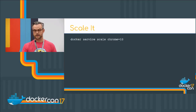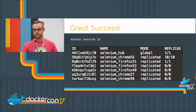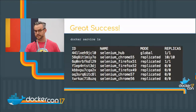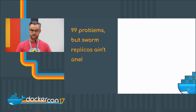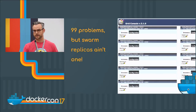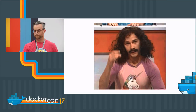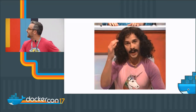If we want to scale it up, we run the Docker service scale command — here we're saying we want ten Chrome replicas. If we run Docker service LS again, you'll see we have ten Chrome 55 containers running. We have different services for Chrome and different versions of Chrome and different versions of Firefox. If we point our browser to the Selenium hub, this shows the status of our grid and you'll see we have ten versions of Chrome 55 running. It's all like magic.